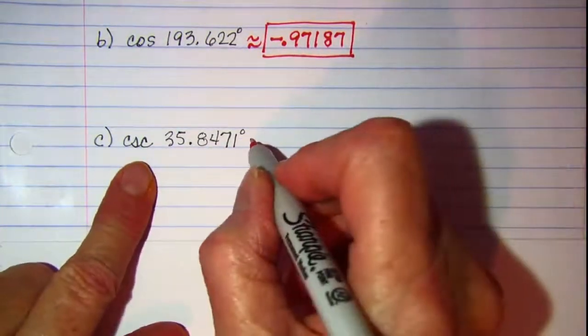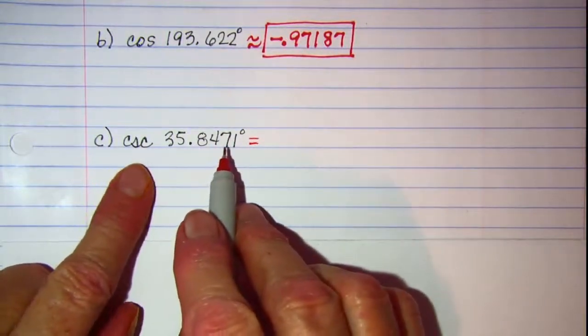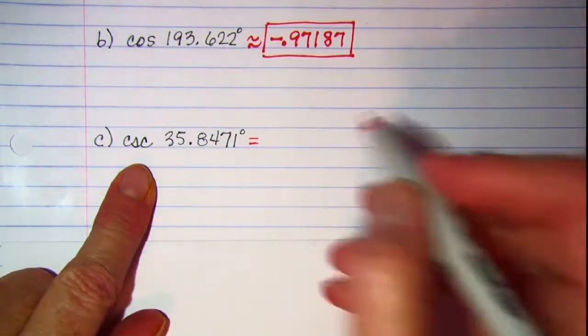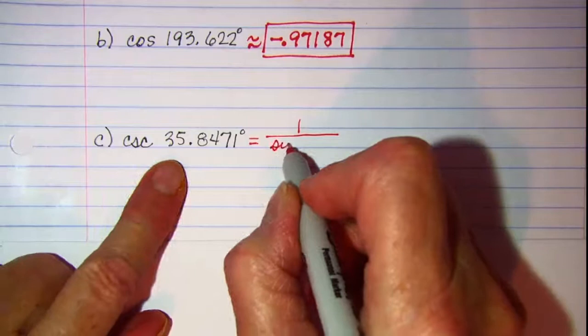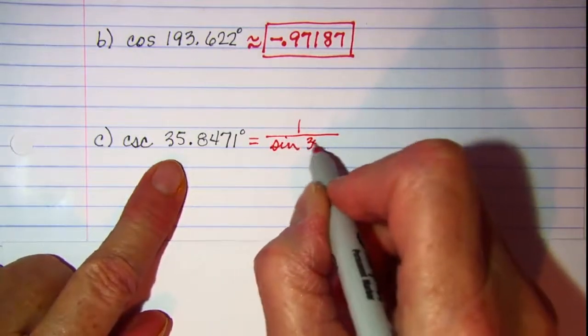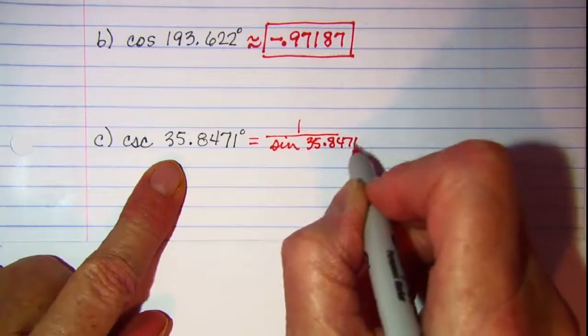I need to state that this cosecant is 1 divided by sine, so 1 divided by the sine of 35.8471 degrees.